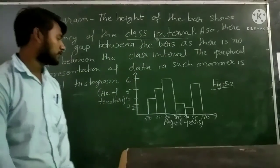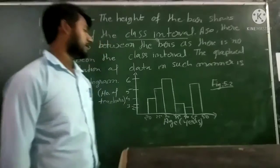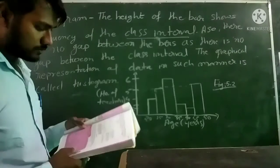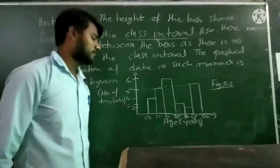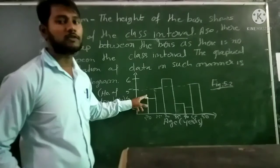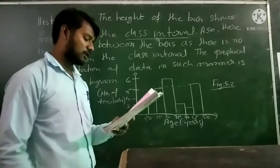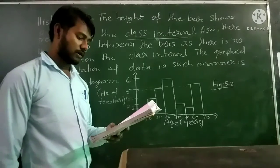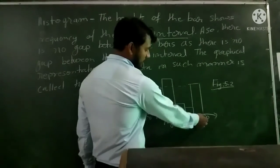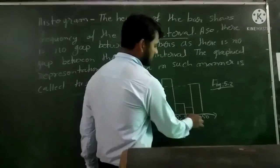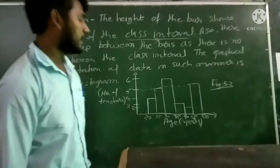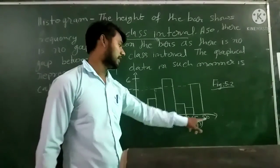Based on this histogram, there are some questions given. The first question is: how many teachers are of age 45 years or more but less than 50 years? Looking at the bar for 45 to 50, the answer is 5. So, 5 teachers are there whose age is more than 45 but less than 50 years.